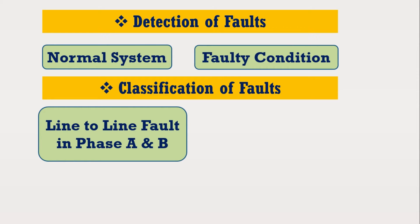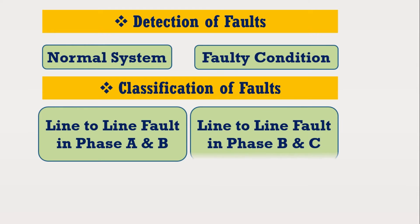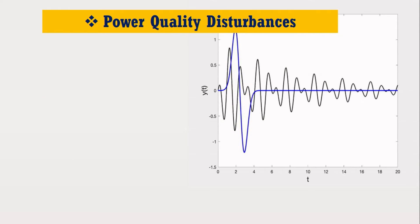Before sharing how and by which techniques power system fault identification and classification in transmission as well as distribution systems can be carried out, let's consider another situation. We know that a power system is subjected to various transients and harmonics due to switching, load variation, and many other reasons.